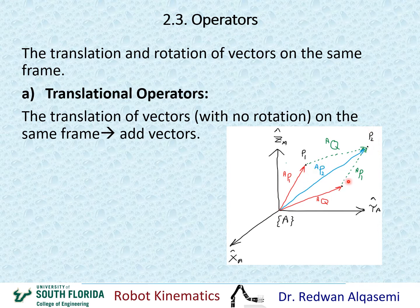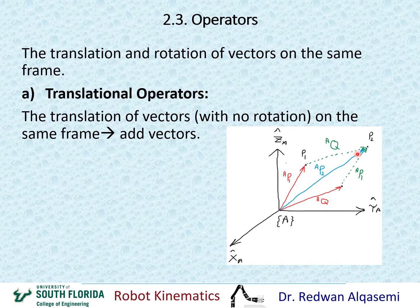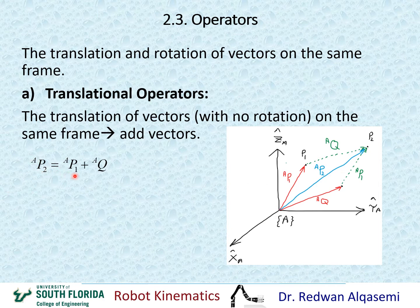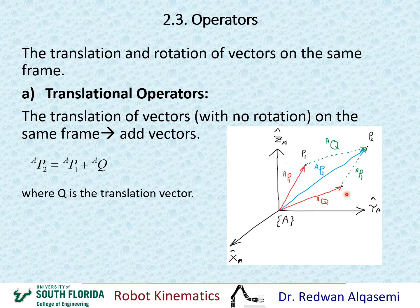After moving p1 relative to A to the new position, we call that point p2. What we need to find is the definition of p2 relative to frame A. Since we can add vectors, p2 relative to A equals q relative to A plus p1 relative to A. So: p2/A = p1/A + q/A, where q is the translation vector shown in the graph.